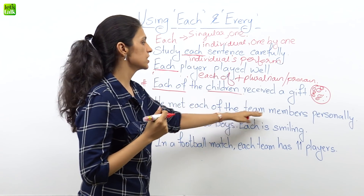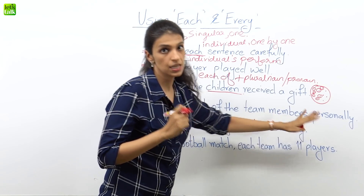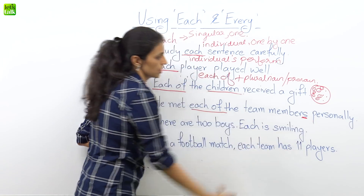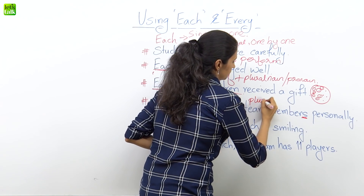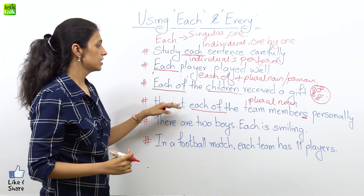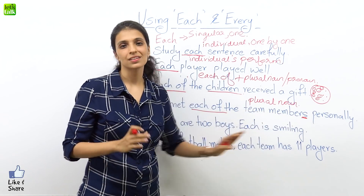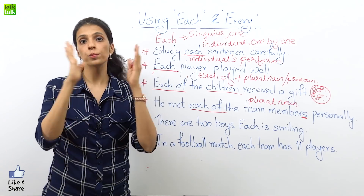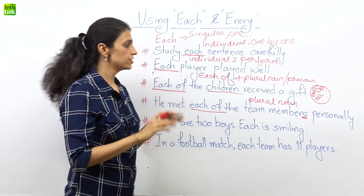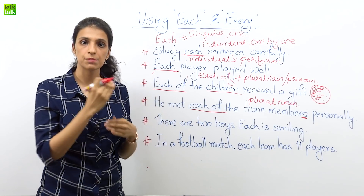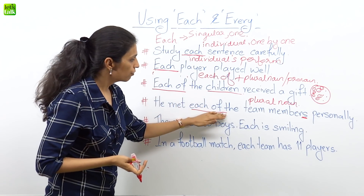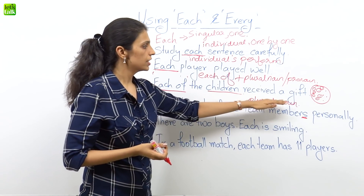Next sentence: 'he met each of the team members personally.' Again, with 'each of,' you have 'members' — a plural noun. You can't say 'he met each of the team member' — that is absolutely incorrect, because there are so many team members. So out of many, he met each of them personally, one by one. Remember: 'each of' is followed by a plural noun or pronoun — you can also say 'he met each of them personally.'